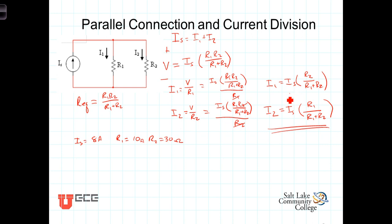From our current divider formulas, I1 is equal to I sub S, which is 8, times R2, which is 30 over 10 plus 30, or that's equal to 8 times 3 fourths, or 6 amps flowing through I1.